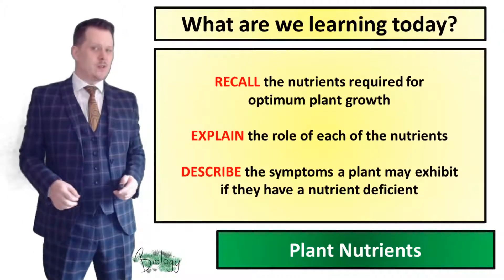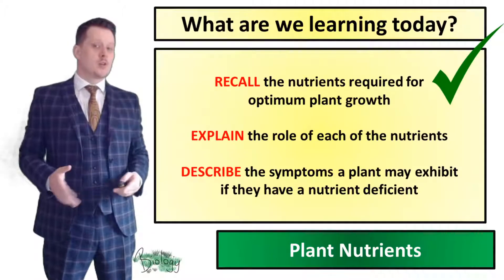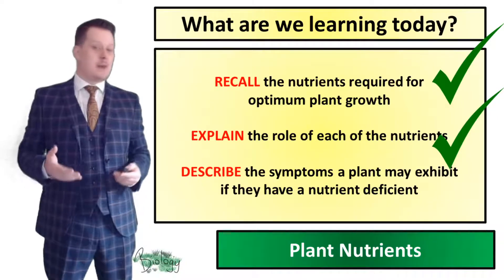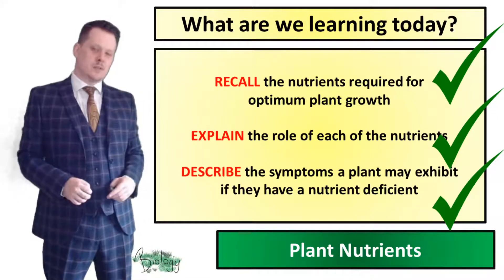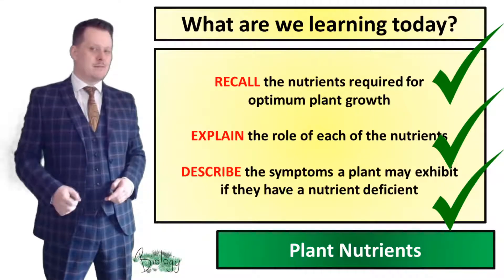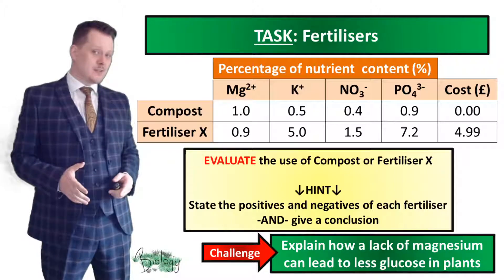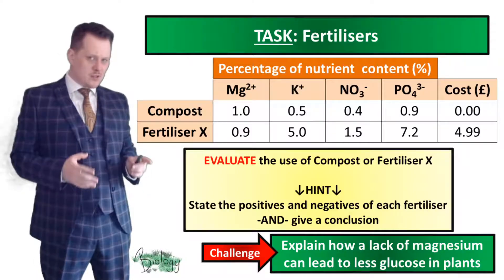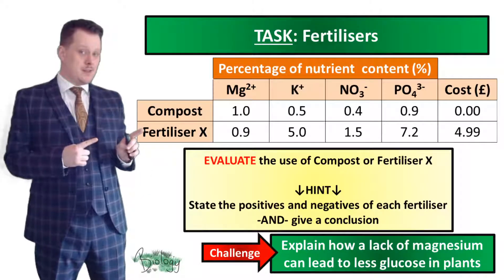So now we can recall the nutrients required for optimum plant growth, explain the role of each of these nutrients, and describe the symptoms a plant may exhibit if they have a nutrient deficiency. Next I want to look at ways that people make sure our plants have these nutrients by looking at different types of fertilizers.